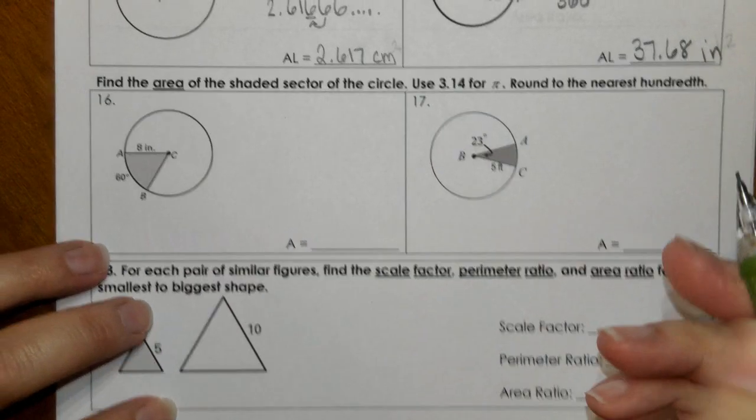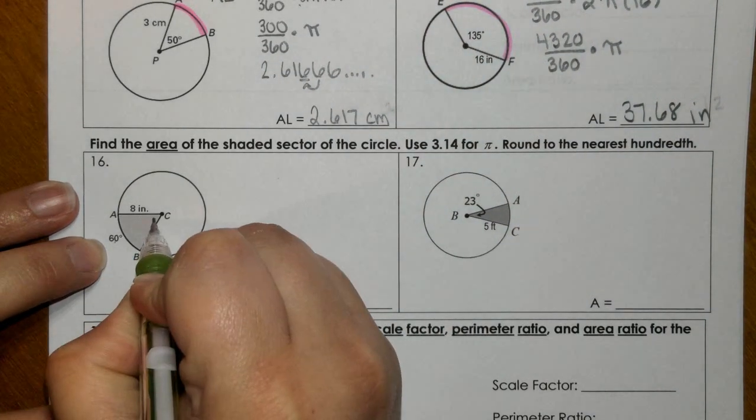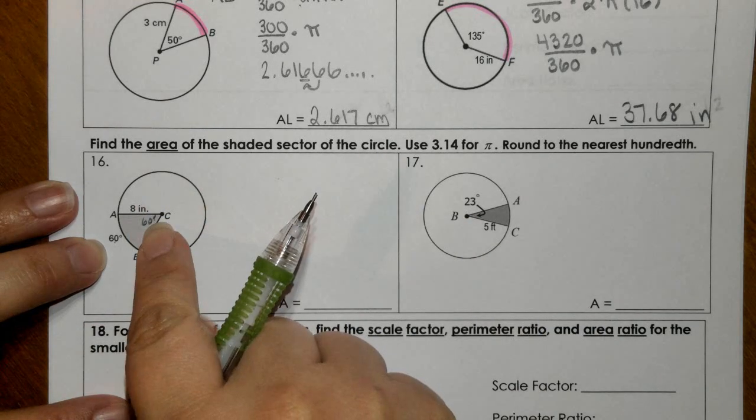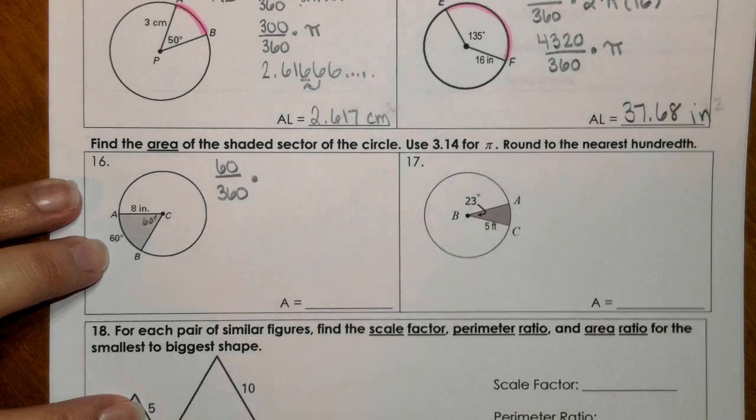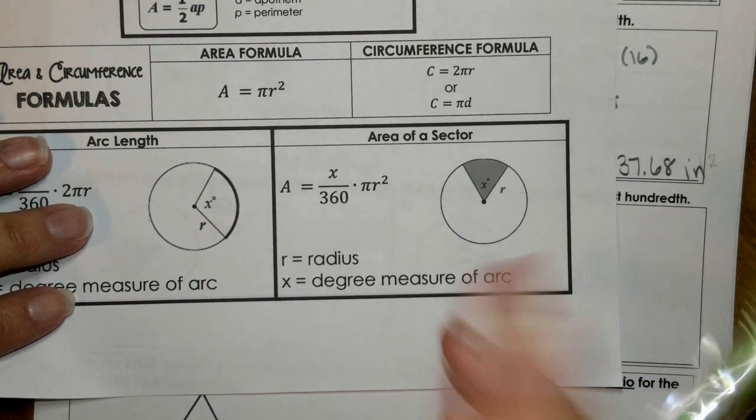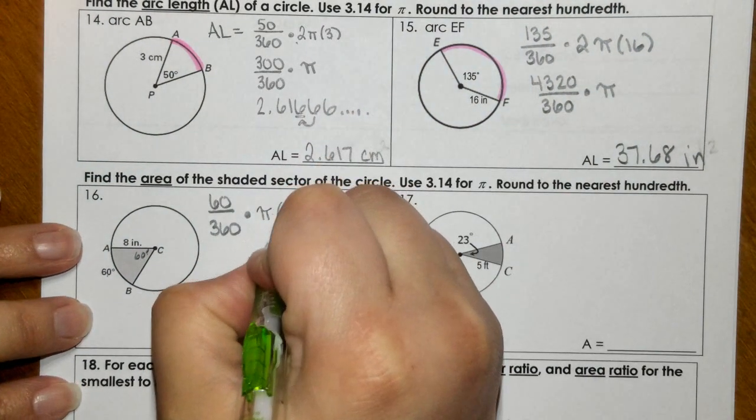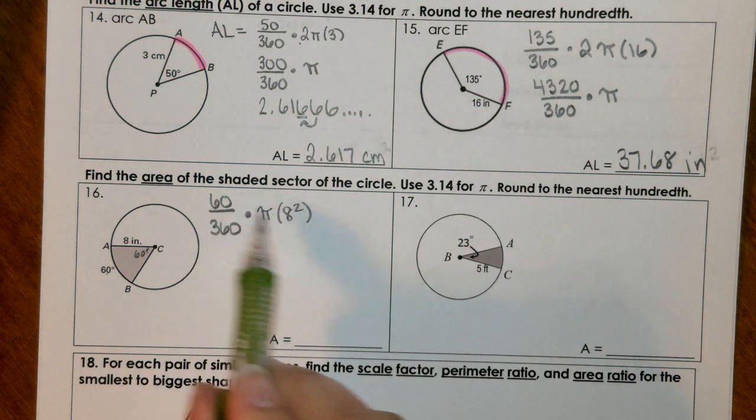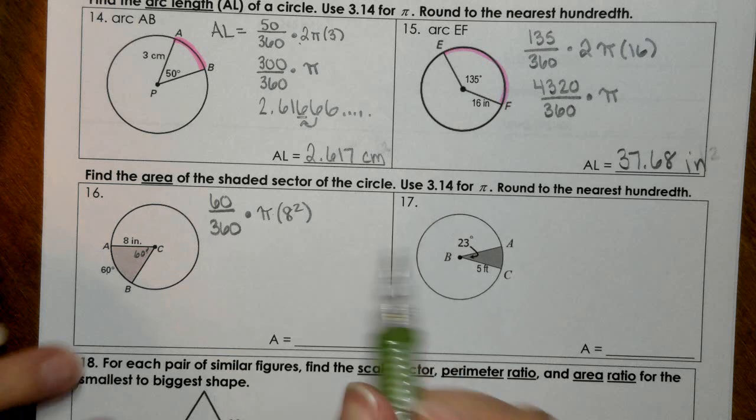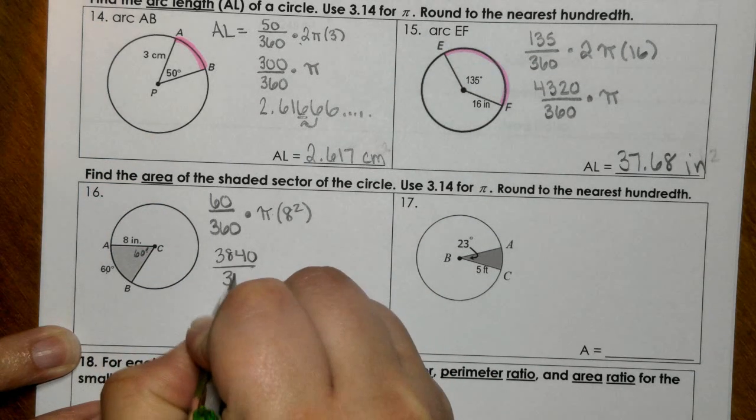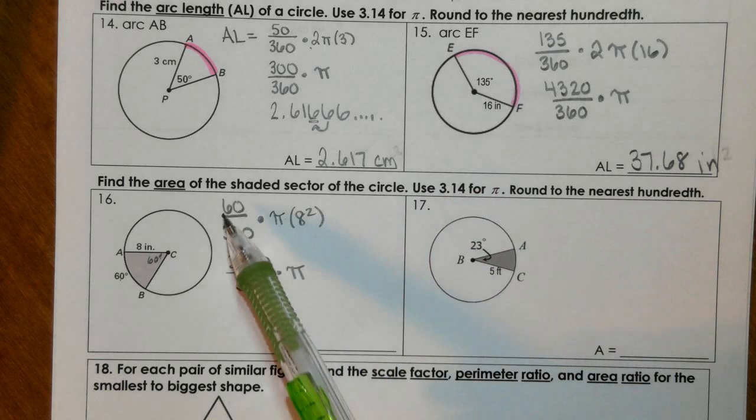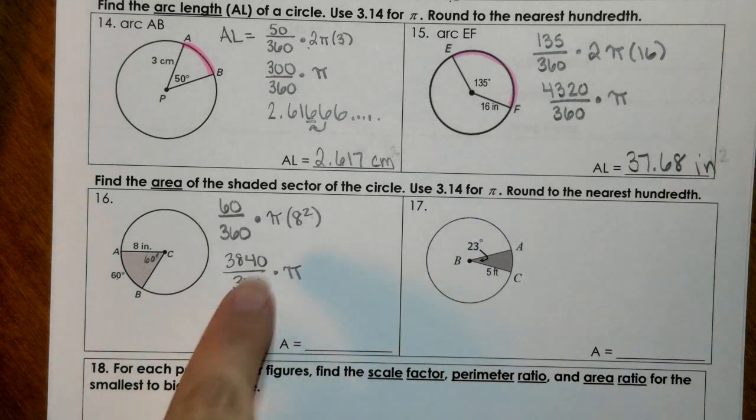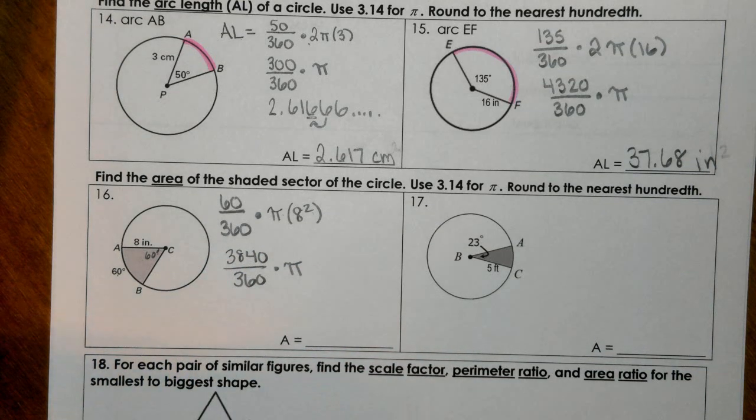Now for area of the shaded sector, so you're finding just a piece of the circle, we're going to do the angle measure again. So the arc measure is the same as the central angle measure. We learned that before spring break. So 60 divided by 360, since we're in area of the sector, you're using this formula, so times πr squared. So what I would do is I would do 60 times the 64. So 60 times 64 gives me this. We can take that, divide it by 360, and then times by 3.14.